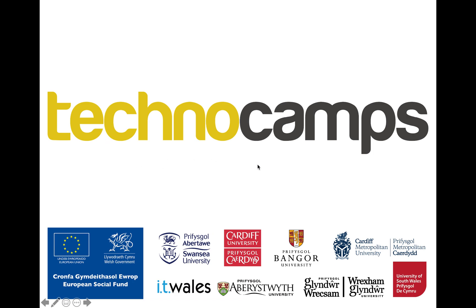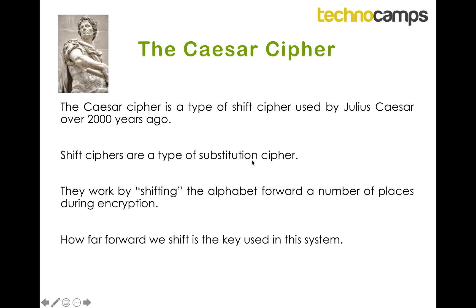Hi, Luke here from Technicamps and today we're going to be looking at shift ciphers and Caesar ciphers. The Caesar cipher is a type of shift cipher which was used by Julius Caesar over 2000 years ago. Shift ciphers are a type of substitution cipher, so we're going to be substituting letters for other letters. They work by shifting the alphabet forward a number of places during encryption, and then during decryption we shift the alphabet backwards. How far forward we shift is the key we're going to be using in our system.